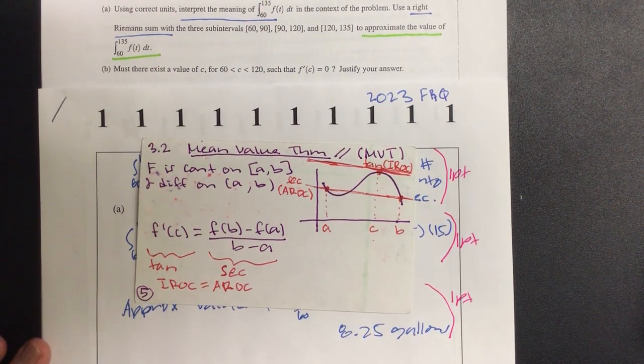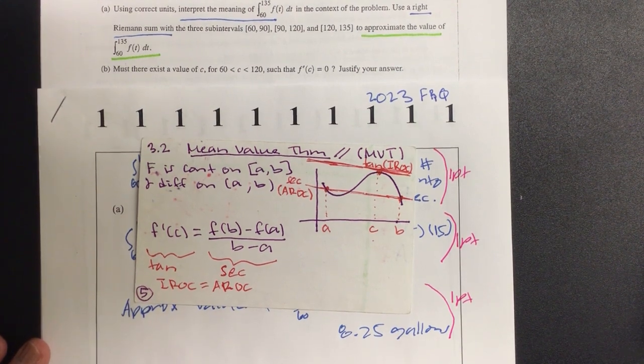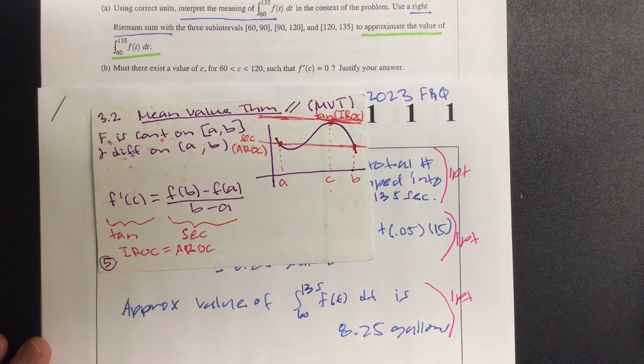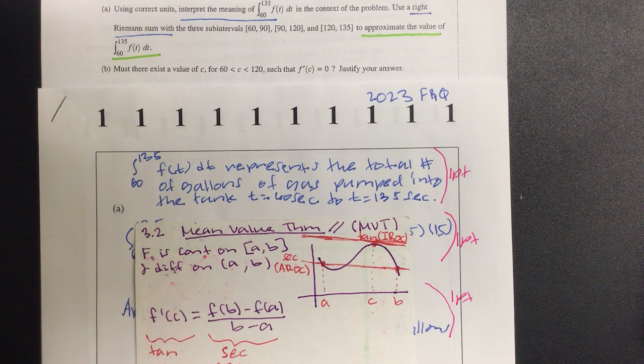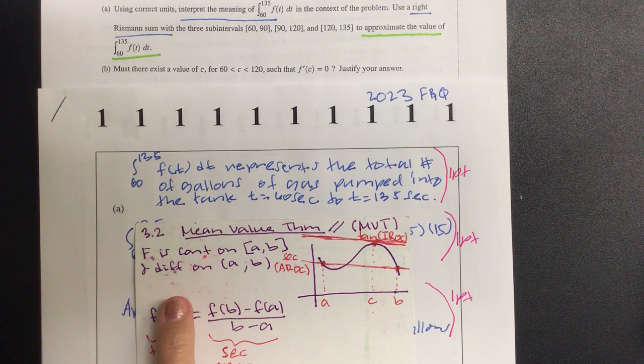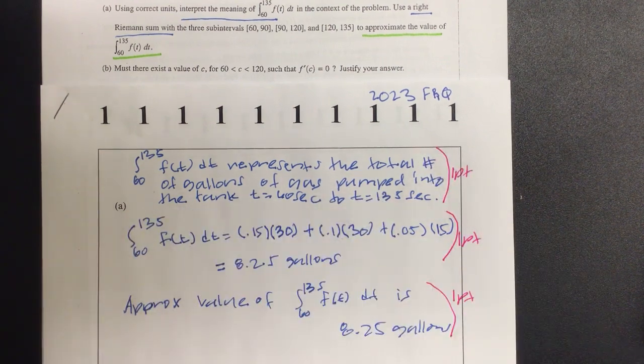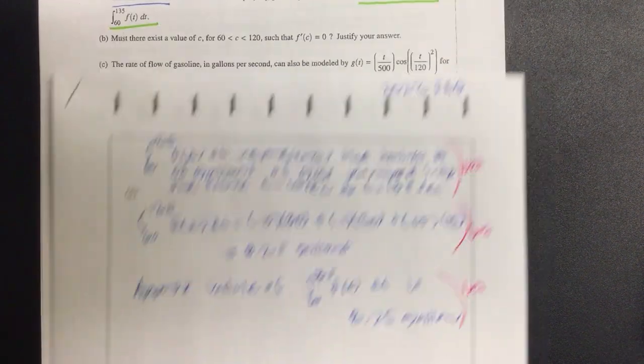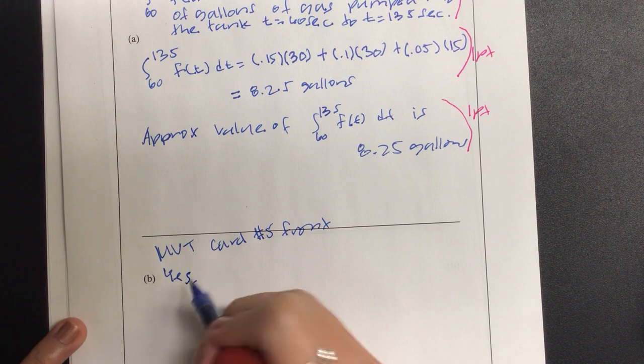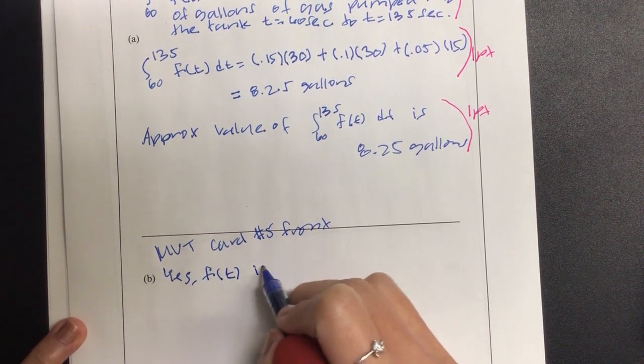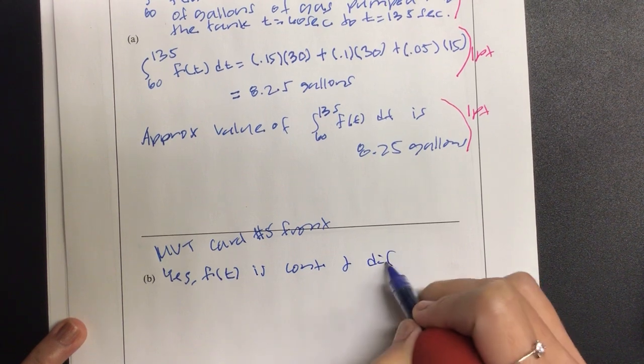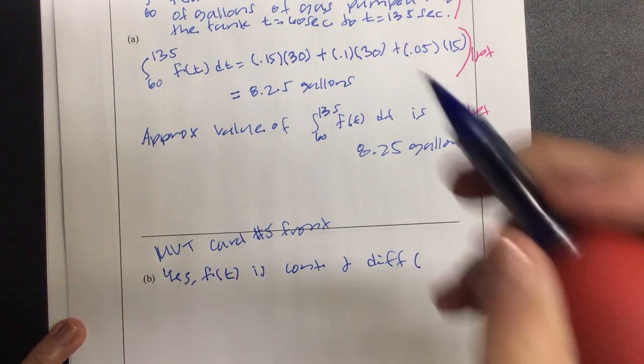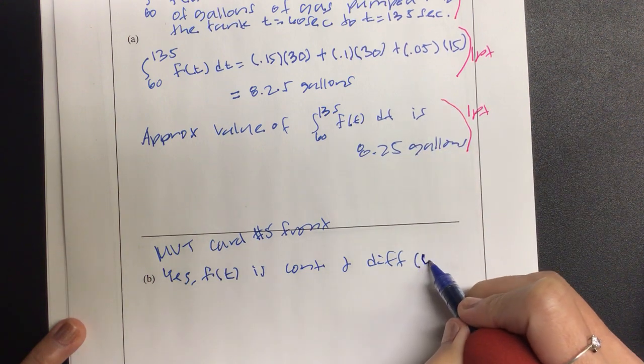So let's kind of recall the mean value theorem. This is our mean value theorem. And it's card number 5. If you're keeping up with the cards with me, it's card number 5 and it's the front. So card number 5 says for us to use mean value theorem, I have to state the function is continuous and differentiable. Okay? So let's go ahead and state that. F, is it? Or is this F? Yeah. So first they asked us, can that happen? Yes. F of T is continuous and differentiable on the interval from 0 to 150. Actually, they use 60, right? 60 to 120. If you want to use the inequality notation, that's also okay.